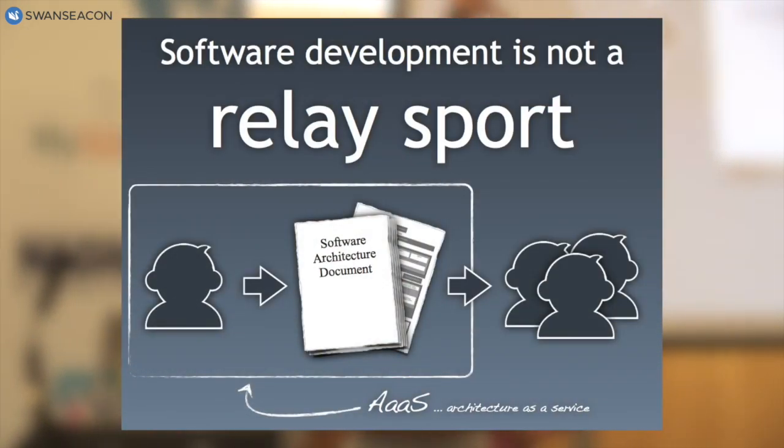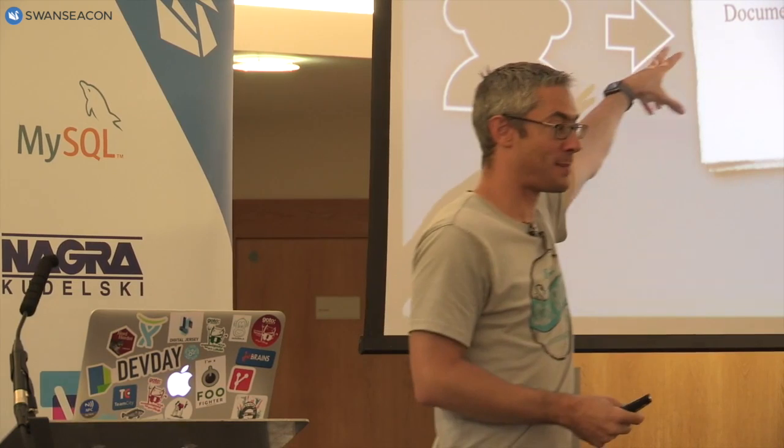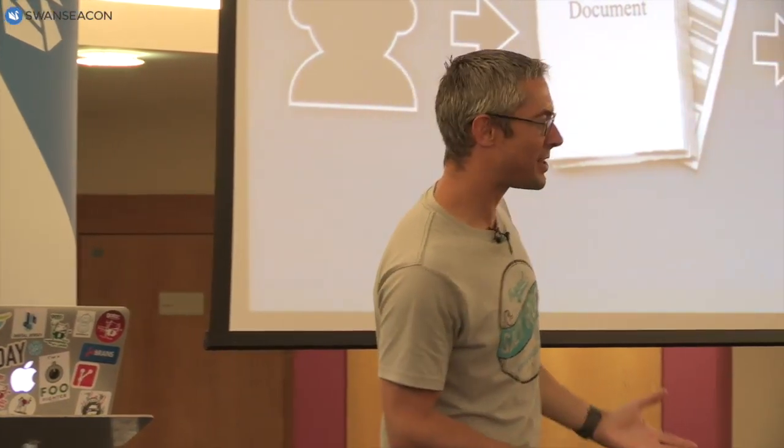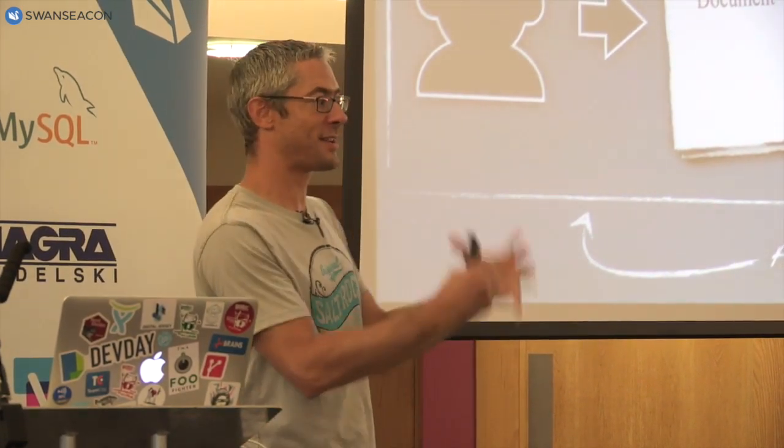It was because people treated software development like a relay sport. I once interviewed a guy in London whose job title was solution architect. He would go to customers, do architecture, create a document, and throw it to a team — and that was all. He was never involved in building the thing. I asked him, 'How do you know your design is going to work?' He was massively offended, then said, 'I don't. It's their problem — it's an implementation detail.' That whole way of working is 'architecture as a service' — just an upfront exercise. An architect comes in, does architecture, and leaves. That's not what software development is about.